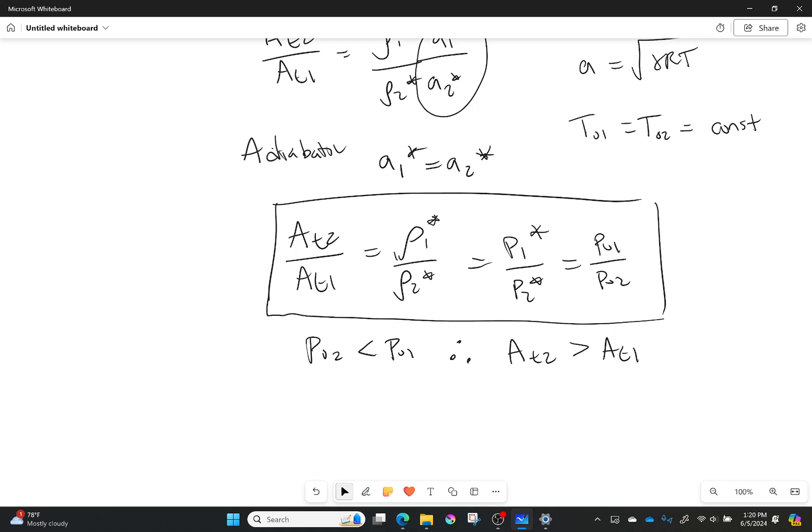Well, we know that P naught 2 is always less than P naught 1, which means that my second throat must always be more than my first throat. It has to be. It will never be the same unless you have a perfectly isentropic diffuser.